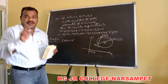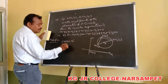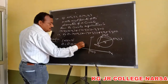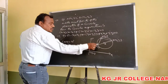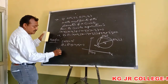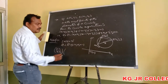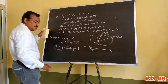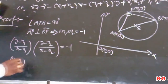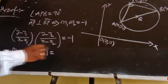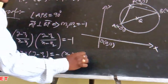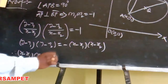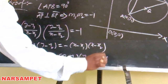AP and BP are both perpendicular. Whenever two lines are perpendicular, the product of their slopes equals −1. The slope of AP is (y − y1)/(x − x1), and the slope of BP is (y − y2)/(x − x2). Their product equals −1. By simplification: (y − y1)(y − y2) = −(x − x1)(x − x2), which gives (x − x1)(x − x2) + (y − y1)(y − y2) = 0.